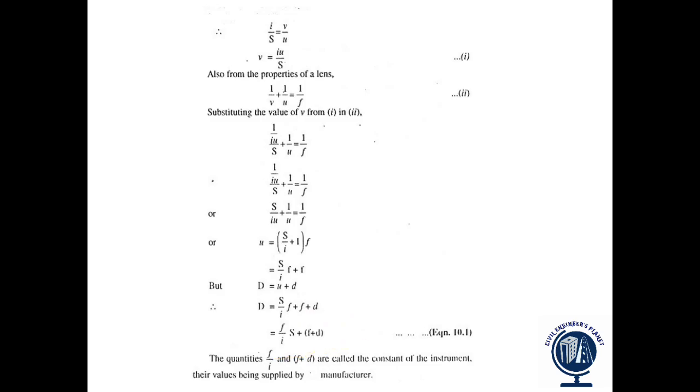So we have got two quantities. First one is f by I and the second one is f plus D. These two quantities are called the constant of the instrument, or the tachometric constant, or stadia constant. The values of these constants are supplied by the manufacturer. And if we provide the analytic lens in the tachometer, then the additive constant becomes zero and it becomes easier to calculate the distances.